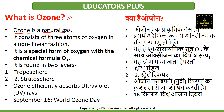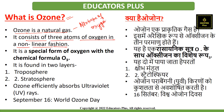Ozone is a natural gas and it is an allotrope of oxygen which consists of three atoms of oxygen. These three atoms of oxygen are bound together in a non-linear fashion and it is a special form of oxygen with chemical formula O3. What we breathe is O2, but the one we are talking about is ozone, that is O3.